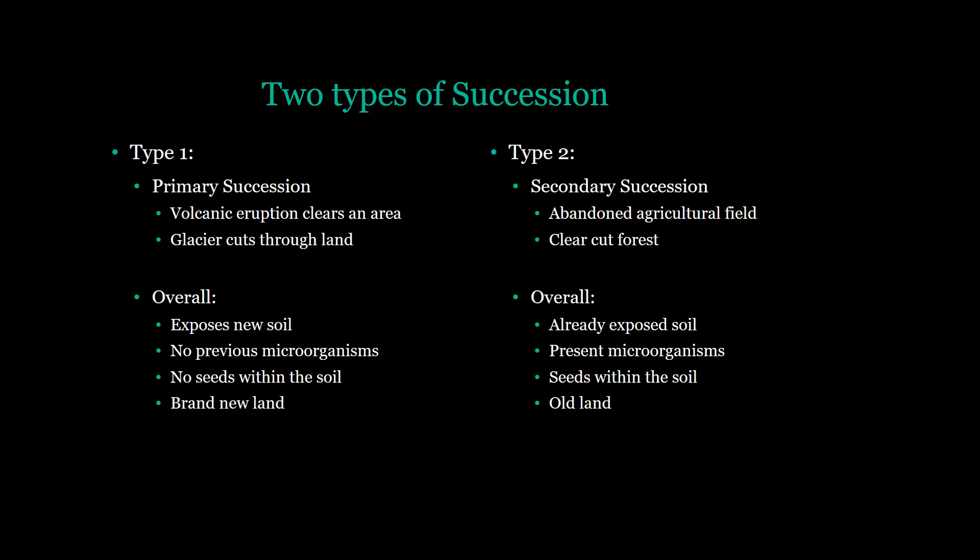Secondary succession happens when an agricultural field is abandoned or a forest is cut. Overall, there is already exposed soil, an established organism community, and a seed bank. Species are just colonizing an old piece of land without competition.